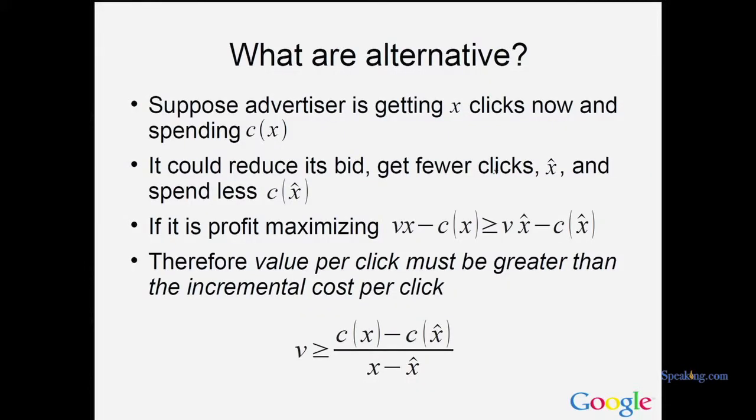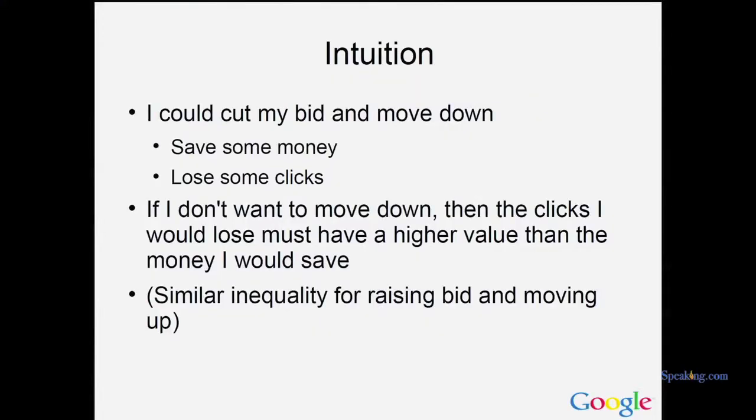Suppose you've got an advertiser getting a certain number of clicks and spending a certain amount of money. He could cut his bid down to X-hat and spend less money. If he's making the right choice now, the profit he's getting now would be better than the profit he'd get by cutting his bid. As soon as you write down that statement — that the value of clicks minus the cost is at least as big as the alternative — you get a nice lower bound: the value of clicks has to be at least as big as the incremental cost. The logic is just Econ 101: I could cut my bid and move down, saving some money but losing some clicks. If I don't want to move down, the value of those clicks I'd lose must be higher than the money I'd save.